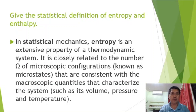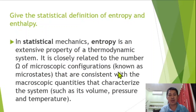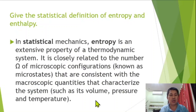Give the statistical definition of entropy and enthalpy. In statistical mechanics, entropy is an extensive property of a thermodynamic system. It is closely related to the number of microscopic configurations — known as microstates — that are consistent with the macroscopic quantities characterizing the system, such as its volume, pressure, and temperature.